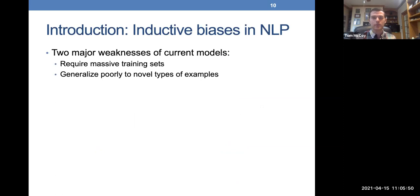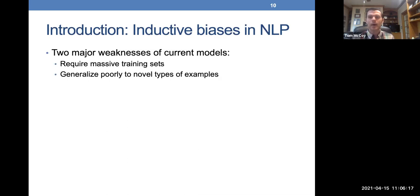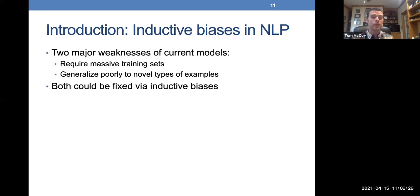Why should we care about inductive biases in NLP? Two prominent weaknesses of current models relate closely to inductive biases. First, these models require humongous training sets — far more data than humans require to learn the same phenomena. Second, these models tend to generalize poorly to novel types of examples; out-of-distribution generalization dramatically lowers performance. Both weaknesses could be addressed by giving our models better inductive biases, since inductive biases guide how models learn and generalize.